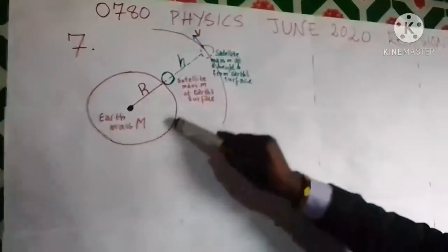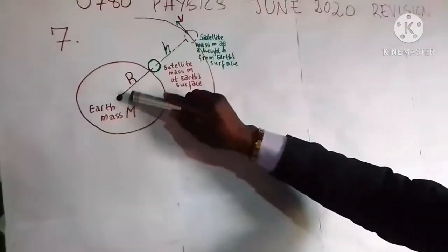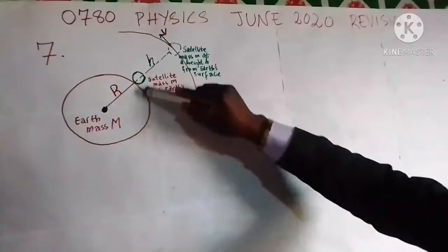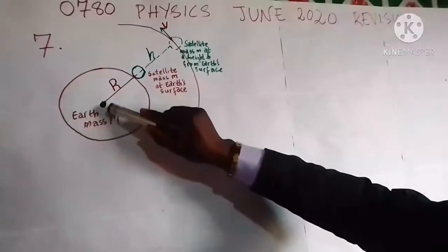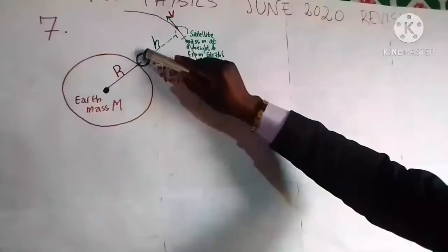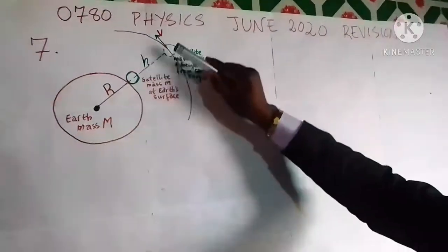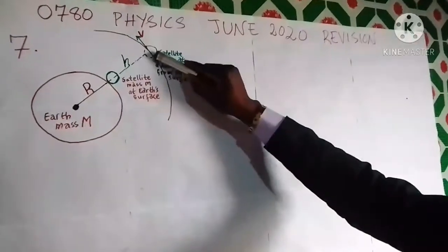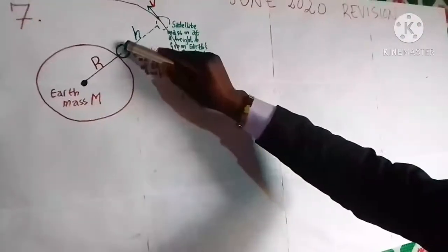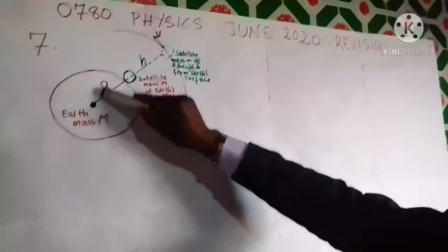This is a sketch that will help you understand how to solve this problem with ease. We assume that the Earth is a perfect sphere of radius R, and this point is the center of the Earth. Big M is the mass of the Earth. Here is the satellite at Earth's surface, and here is the satellite at a height h from the Earth's surface. The separation between the satellite and the center of the Earth at the Earth's surface is capital R.